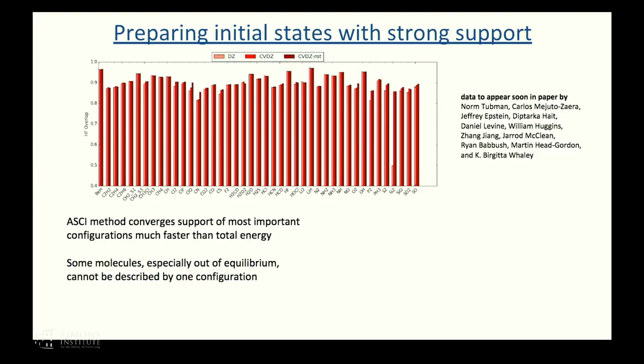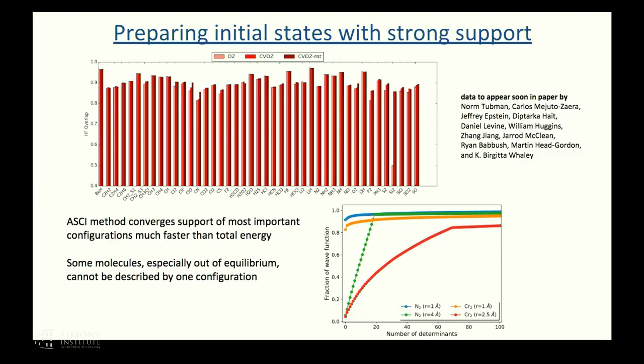I might also point out, for those who know what this is, you could also use these estimates of the overlap for amplitude amplification. But some molecules, once they have strong correlation, maybe stretched configurations, they're not going to have as good of support. So we looked at some of those instances, for instance the nitrogen and chromium dimer, which had pretty good support at equilibrium, but when they were stretched, it turns out you actually have very low support on just one configuration. But were you to create your initial state as a superposition of just the first few important configurations, then you very quickly recover overlap on the wave function. What's nice is you can prepare an arbitrary superposition of L states with T-gate complexity O of L. We're talking about 60 determinants or something here. This is an additive cost to phase estimation, so we believe that we can do this, and it's essentially free because phase estimation is much more expensive.